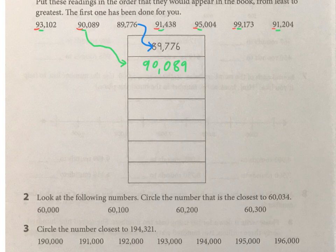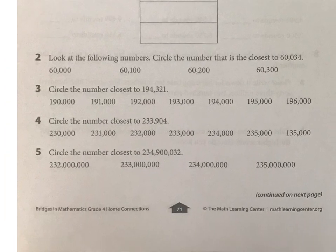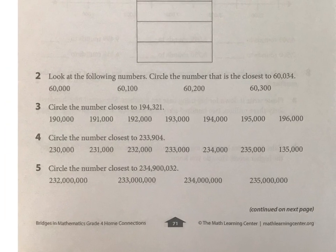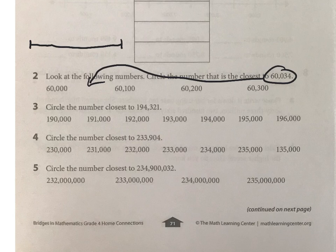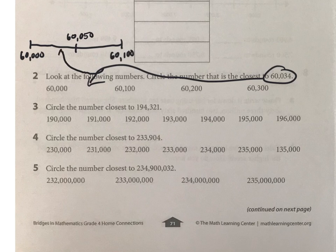Now we're looking at rounding numbers, or what are they closest to. My favorite way to go about this is with a number line — I know that this is going to be between these two somewhere. In the middle of those two you would have 60,050, so 60,034 would be right around there. So it is closest to 60,000.